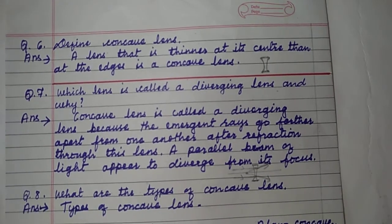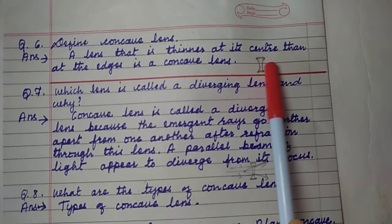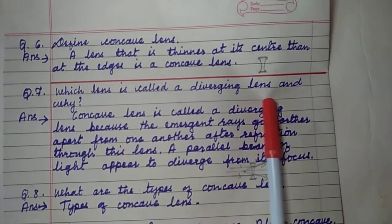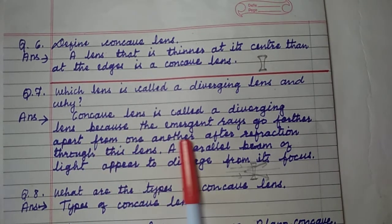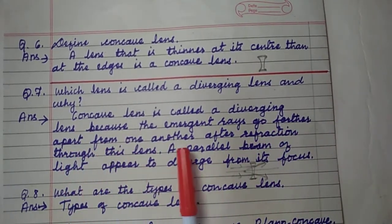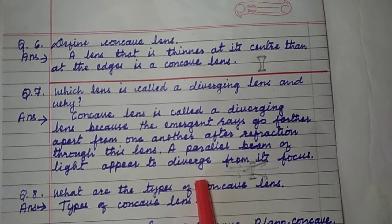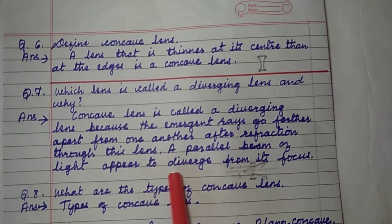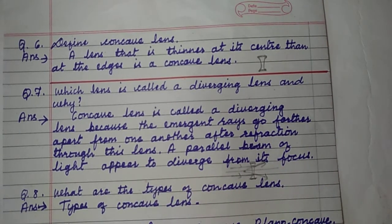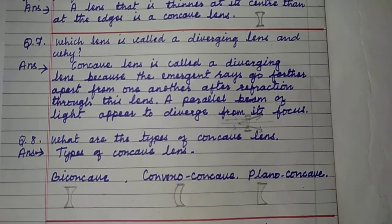Define Concave Lens. A lens that is thinner at its center than at the edges is a concave lens. The middle part is thin and the edges are thick. Which lens is called a diverging lens and why? Concave lens is called a diverging lens because the emergent rays go farther apart from one another after refraction through this lens. A parallel beam of light appears to diverge from its focus. That is why concave lens is called a diverging lens.